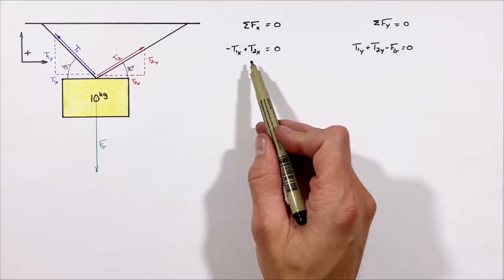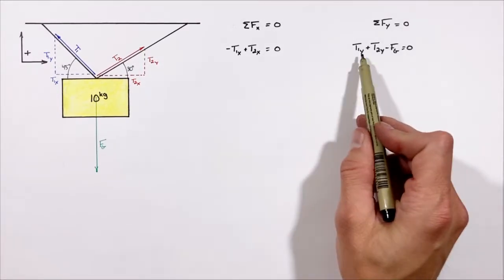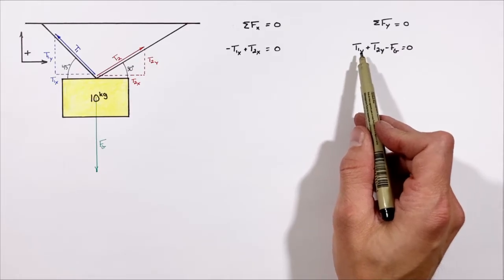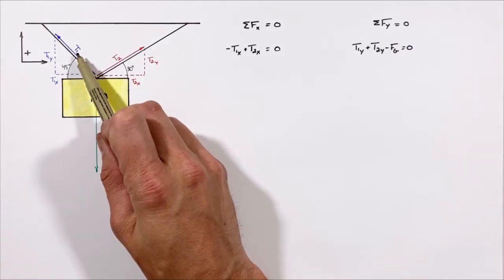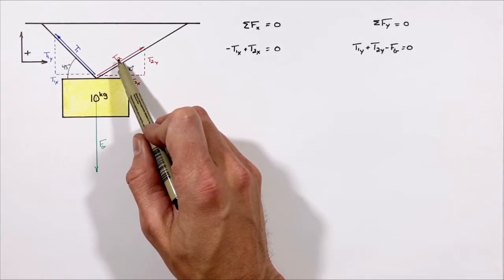The next thing we need to do here is use a little bit of right triangle trig to relate these components that we see within our expressions back to what we're actually trying to solve for—that is t1 and t2.